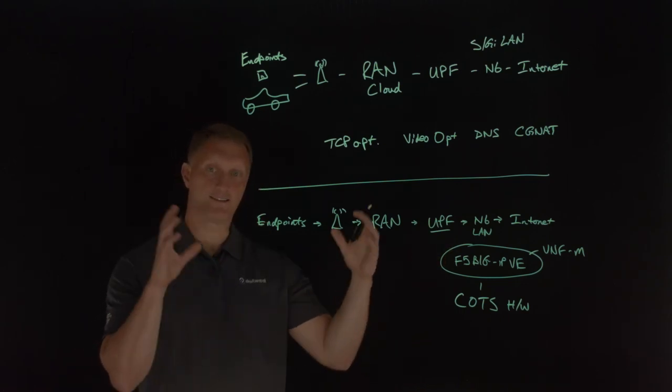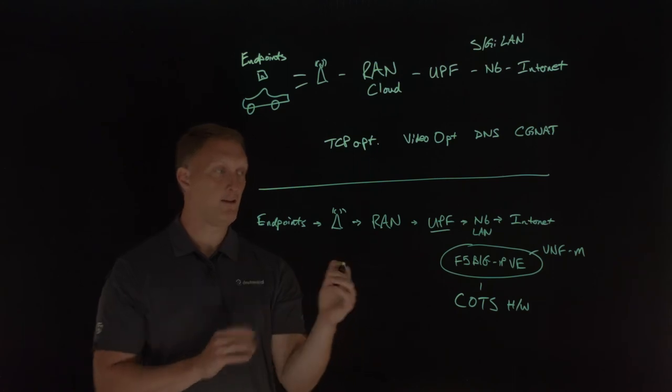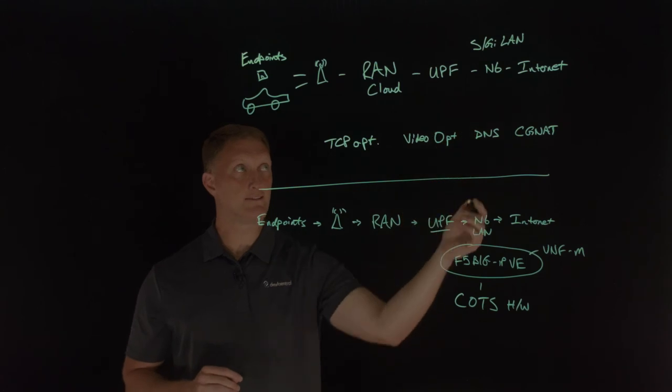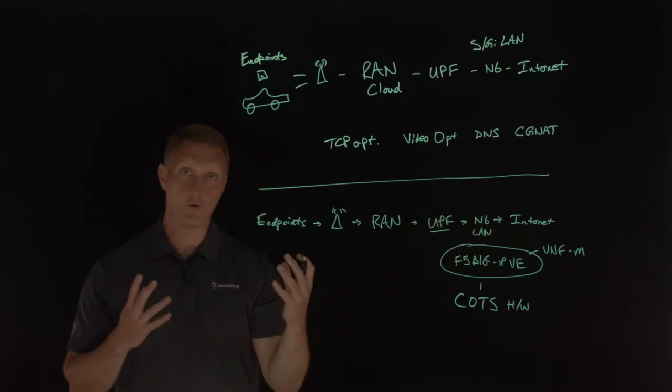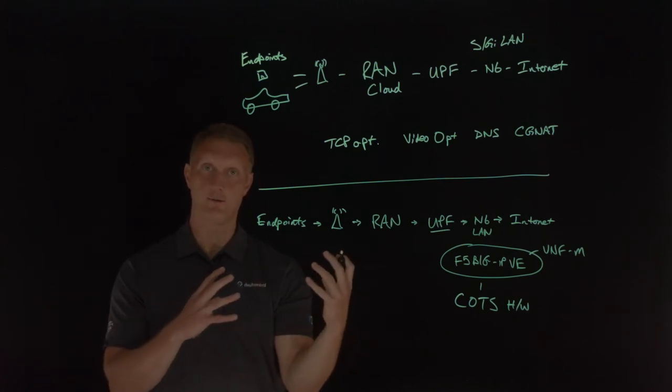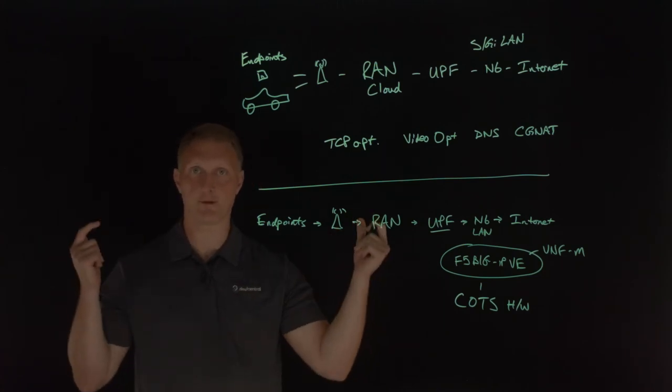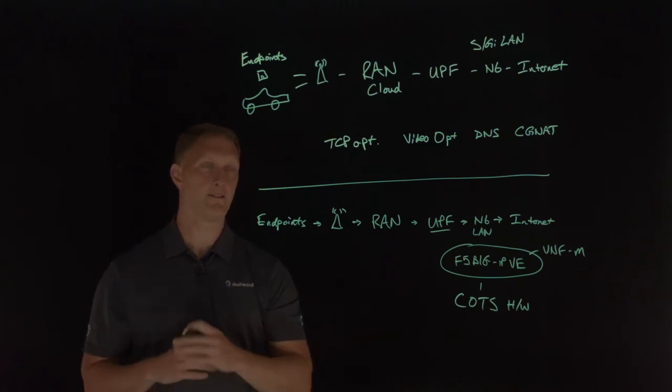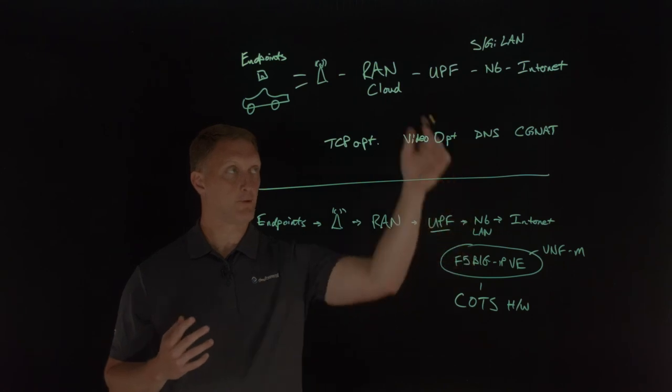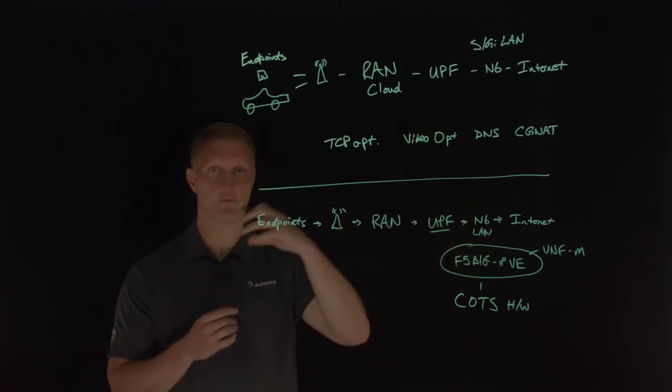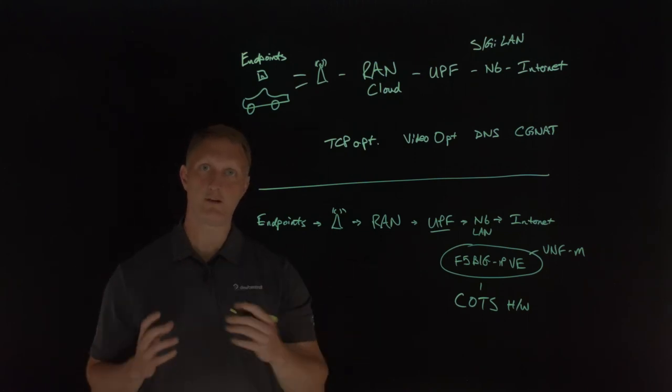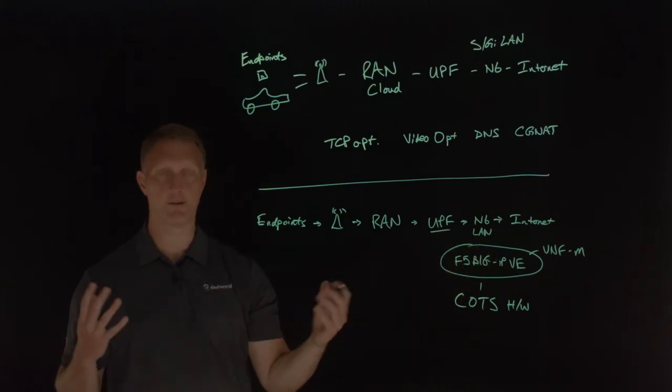So what you've done now is consolidated all of your services on the SGI LAN, which is on 4G LTE, or on the N6 interface on 5G, or as it turns out, many service providers are transitioning from 4G to 5G. And it's not like you can just flip a switch, snap your fingers, and it's done. This is a process. And so F5 provides these services, these consolidated services for both 4G and for 5G. So as you make that journey, you can utilize this solution for both of those.